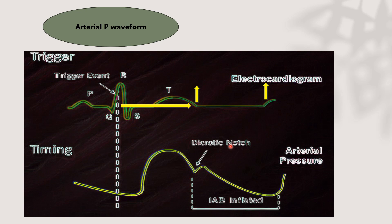Looking at the trigger windows: for ECG, the trigger is the R wave, which starts the cycle. For arterial pressure waveform, the trigger is the systolic upstroke. There is a delay between the electrical impulse and the mechanical effect — a delay of some seconds — which makes a difference in the cardiac cycle timing.